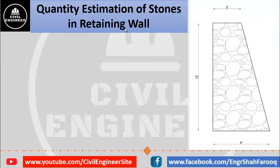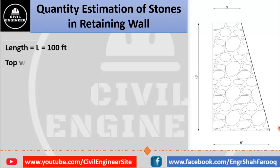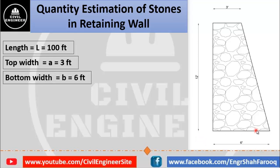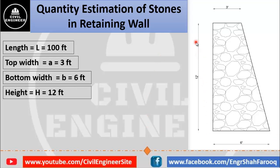Suppose we have a retaining wall with a trapezoidal cross section, which is the most commonly used cross section for retaining walls. The length of the retaining wall is 100 feet, the top width is 3 feet, the bottom width is 6 feet, and the height of the retaining wall is 12 feet.